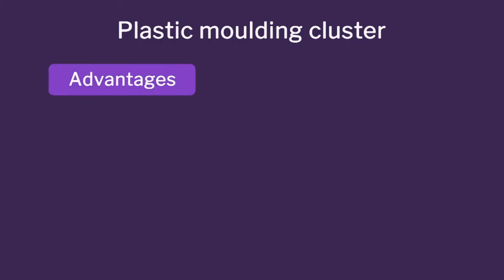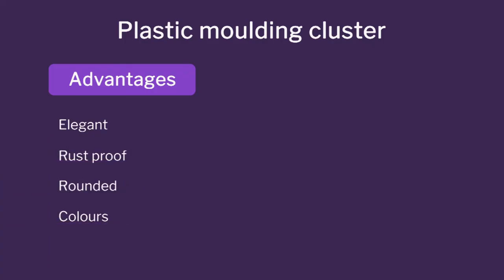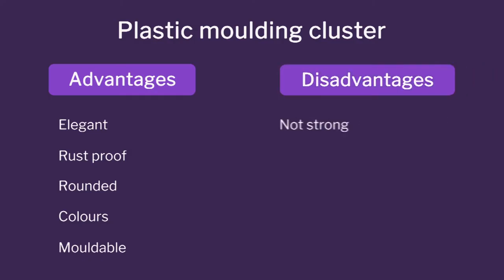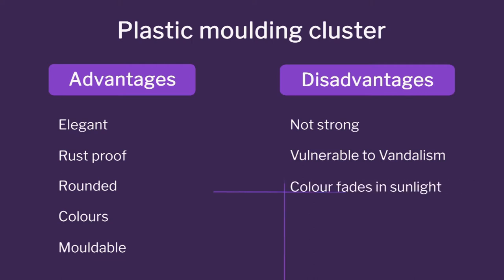Here we have the plastic molding cluster. Advantages: it is elegant, rust-proof, has rounded shapes, and multiple colors can be molded in. Disadvantages: it is not strong — people can hit it with a rock or stone and it can break, so vandalism is an issue, and the color can fade in sunlight. For a national-level public product, you cannot simply use plastic; you have to work out how to go about doing all these things.